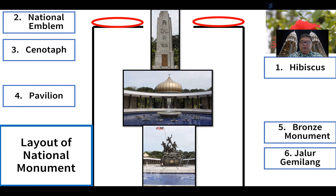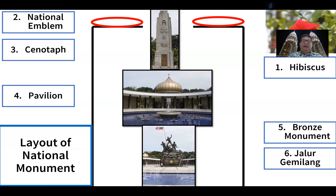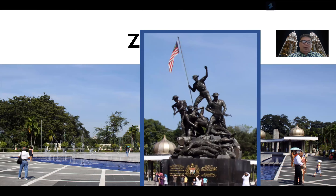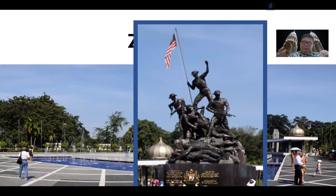After the pavilion, you will see the bronze monument, and at the bronze monument you will also see the Malaysian flag — the Jalur Gemilang — which you can speak on. This is a good example of zooming in one by one. At the bronze monument, each soldier represents something. You can speak for at least 15 minutes on each of these topics combined.